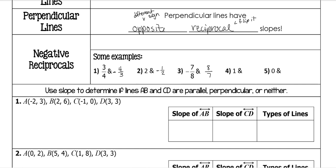A positive one becomes a negative one. And one-over-one, when you flip it, is one-over-one, which is still just one. Zero has no sign, so it's just zero. But if you're talking about slopes and you have a zero slope, the negative reciprocal to that is undefined.